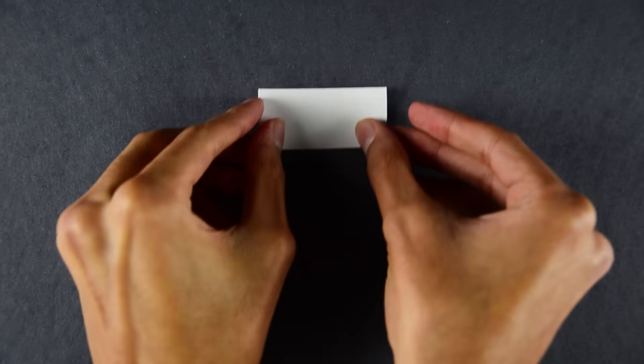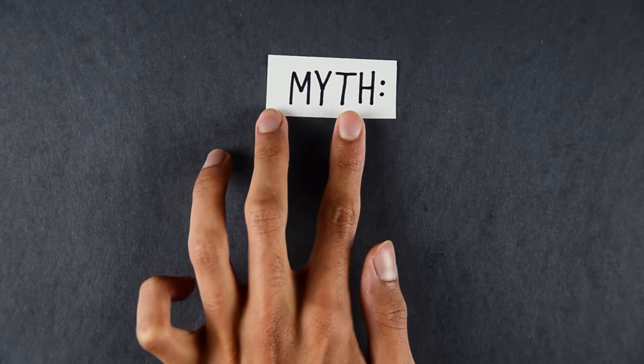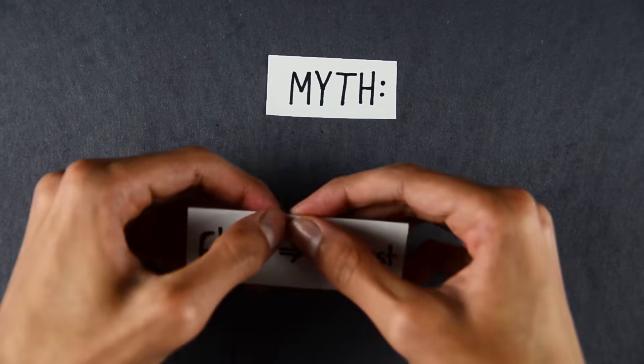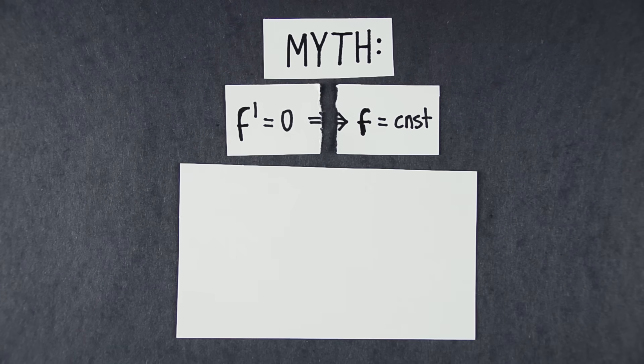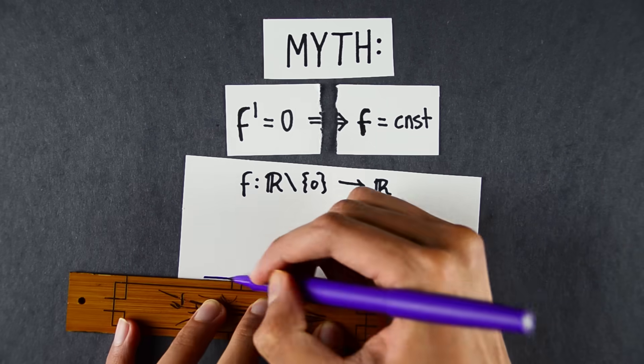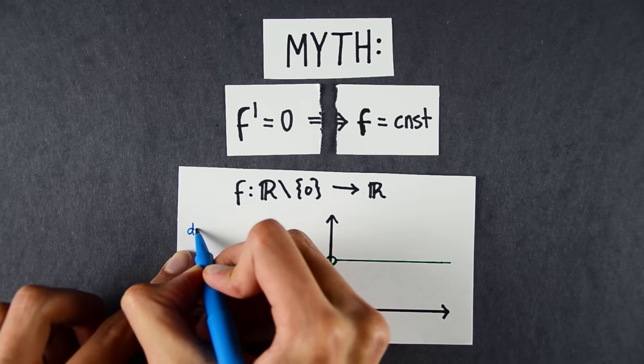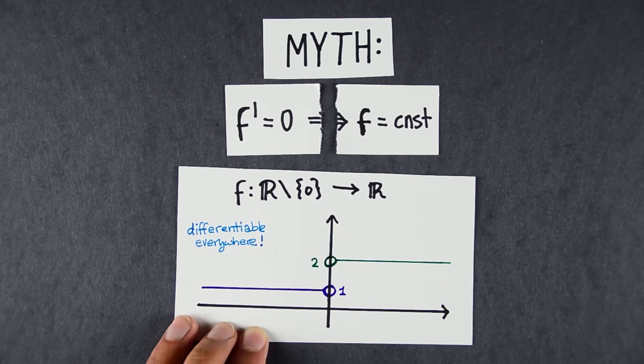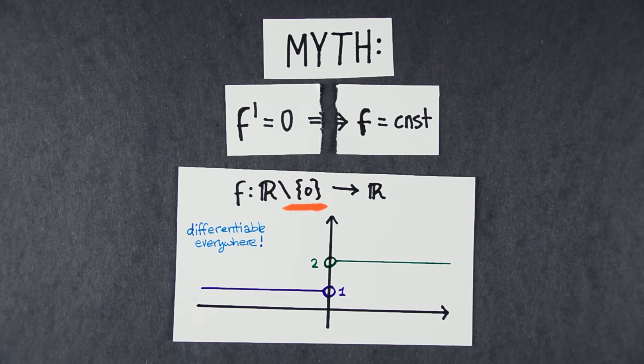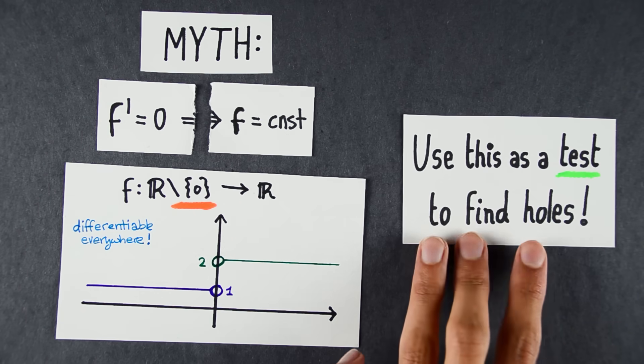Cohomology detects holes in a space by studying functions defined on that space. It looks at when the following myth fails. If a function has derivative 0, it's constant. That's false. Let's define a function on ℝ take away 0. It'll be one number for all negative inputs, and another number for all positive inputs. This function is differentiable everywhere, and has derivative 0. But it's not constant. The reason this happened was because there was a hole at 0. Just like before, we can use this as a test to find holes.